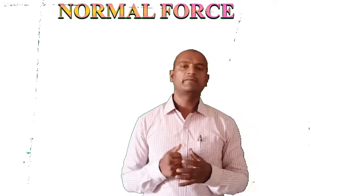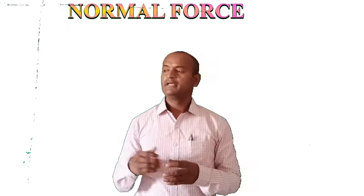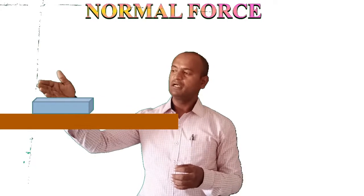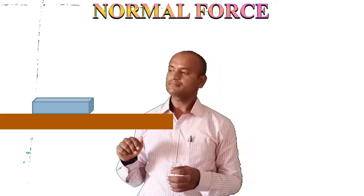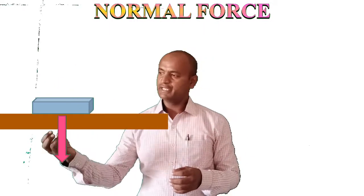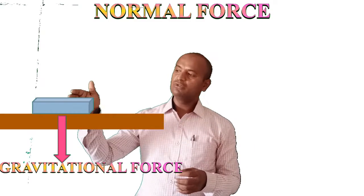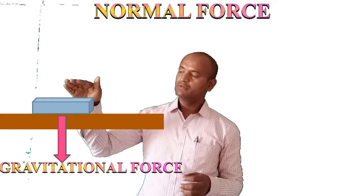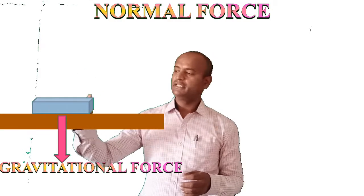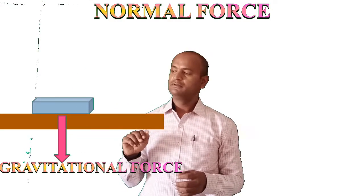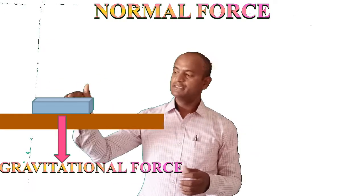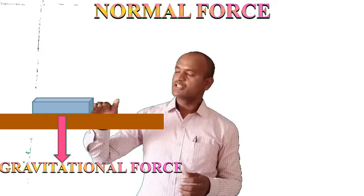The third type is normal force. Here is a book on the table — is any force acting on the book? Yes, the gravitational force is acting on it. Due to gravitational force, the book should fall down, but it doesn't. It is stable on the table. Why? The book is supported by the table.